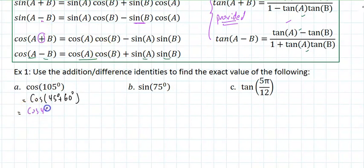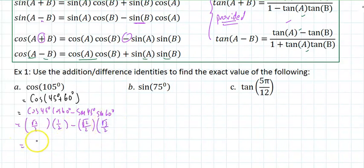If I look at the third formula down, that's cosine of the first, cosine of the second, minus sine of the first, sine of the second. That would be radical 2 over 2 times 1 half, and cosine of 60 is 1 half. And that would be radical 2 over 2 times radical 3 over 2. So that would be all over 4, radical 2 minus radical 6. And there it is.